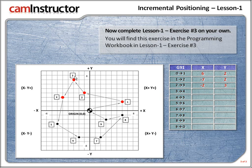Next up on our journey, from 3 to 4. Let's figure out the x first. We're moving to the left, in the x negative direction. How many squares? 1, 2. So from 3 to 4, x is minus 2. What about the y? We're moving down, in the negative y direction. How many squares? 1, 2, 3, 4. So from 3 to 4, x minus 2 and y minus 4.